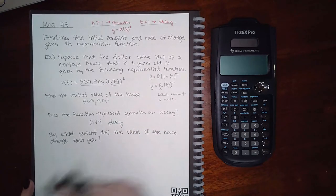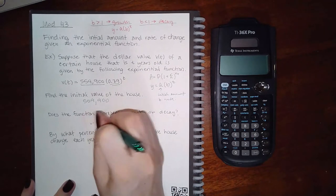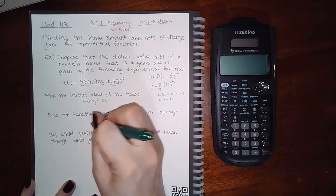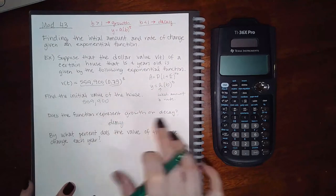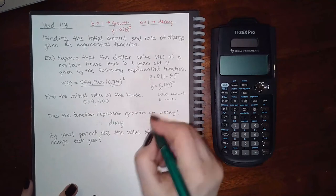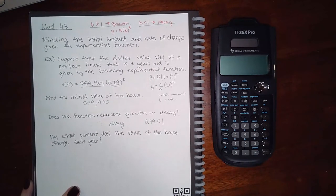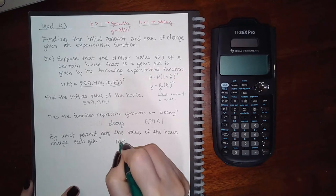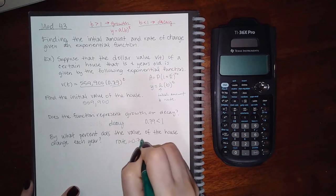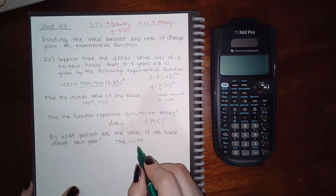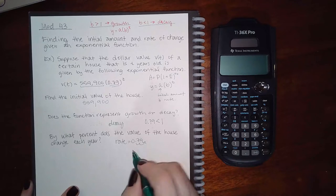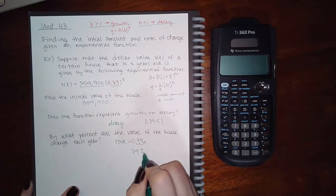So does the function represent growth or decay? It's decay, because 0.79 is less than one. By what percent does the value of the house change each year? Well, I know that the rate is 0.79, but that's decimal. If I want a percent, that's 79 percent.